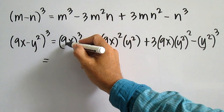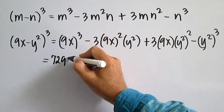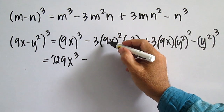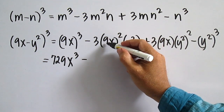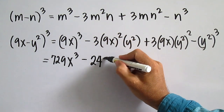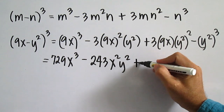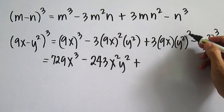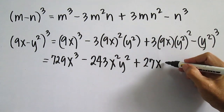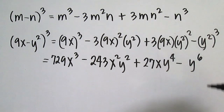This is equal to 9 times 9 times 9: 81 times 9 is 729, x cubed. Minus 9 times 9 is 729, x squared, y squared. Plus y squared squared is y to the power of 4, 3 times 9 is 27, x, y to the power of 4. Minus the cube of y squared, which is y to the power of 6.